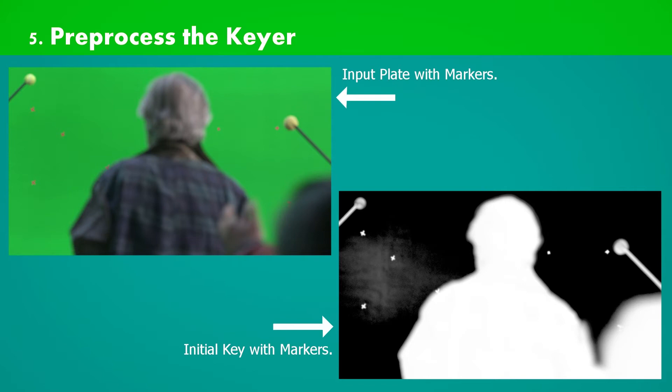Here we have our original plate having markers attached to green backing for tracking or match moving purpose. The tracking or match move artists use these tracking markers to calculate the motion of the shot. Then the same motion is applied to CG character as well as matte painting to line them up perfectly with our original input plate's movement.